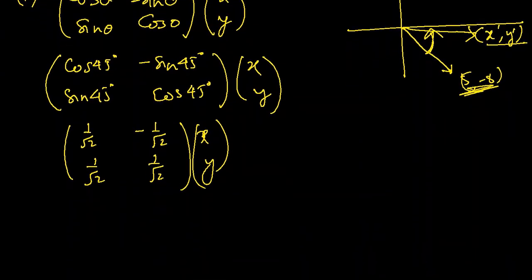If you want to be more accurate, just take 1 over square root 2 out of this and we'll be left with 1, minus 1, 1, 1 times x, y. This is also a cleaner and easier representation of the same rotation.